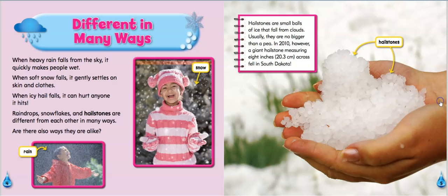Let's get started. Different in many ways. When heavy rain falls from the sky, it quickly makes people wet. When soft snow falls, it gently settles on skin and clothes. When icy hail falls, it can hurt anyone it hits. Raindrops, snowflakes, and hailstones are different from each other in many ways. Are there also ways they are alike?